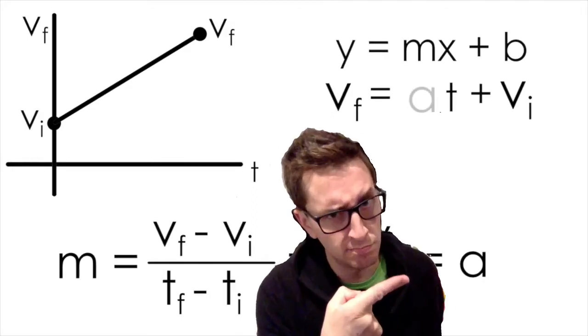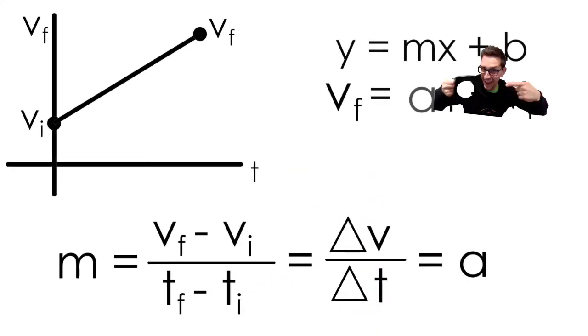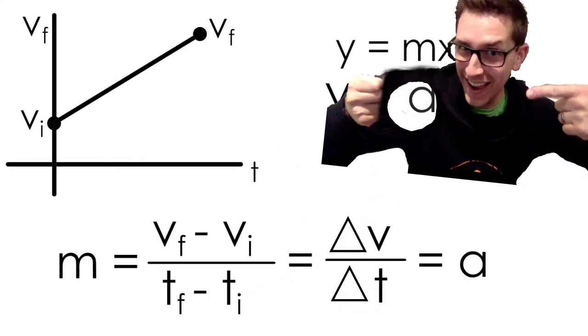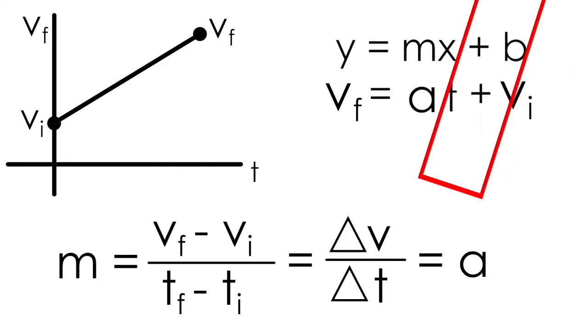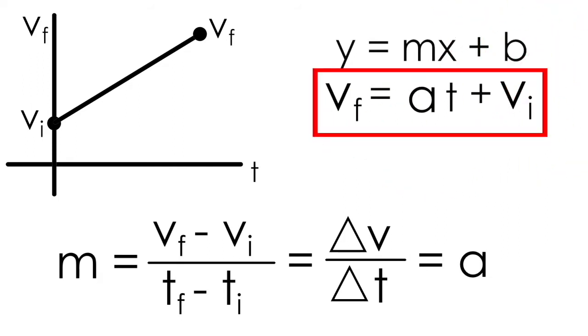So wait, the slope of a velocity time graph is acceleration? It sure is! And substituting a in for the slope of our equation results in a nice, tidy equation that can be used to predict the final velocity of an object accelerating over time.